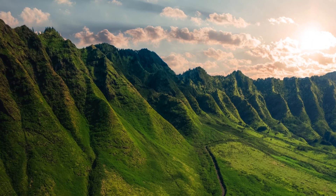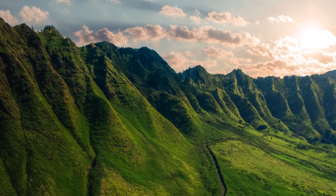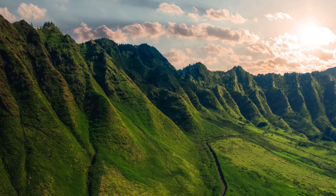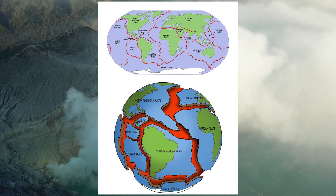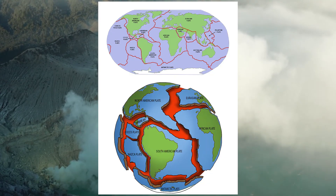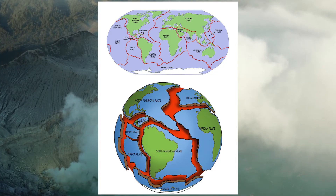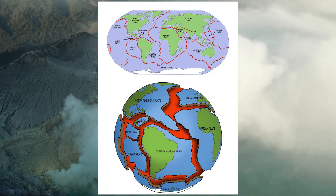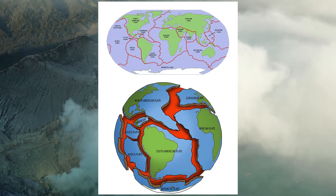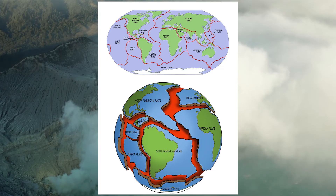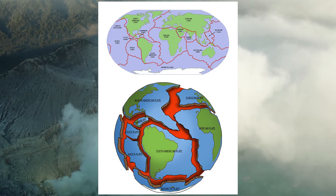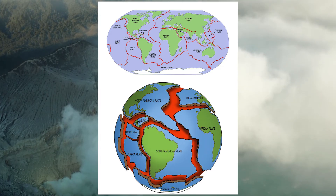Our Earth's outer layer is divided into several gigantic puzzle pieces called tectonic plates. These plates are constantly moving, albeit at a slow pace, due to the convective currents deep within the Earth's mantle. When tectonic plates interact, incredible forces are unleashed.